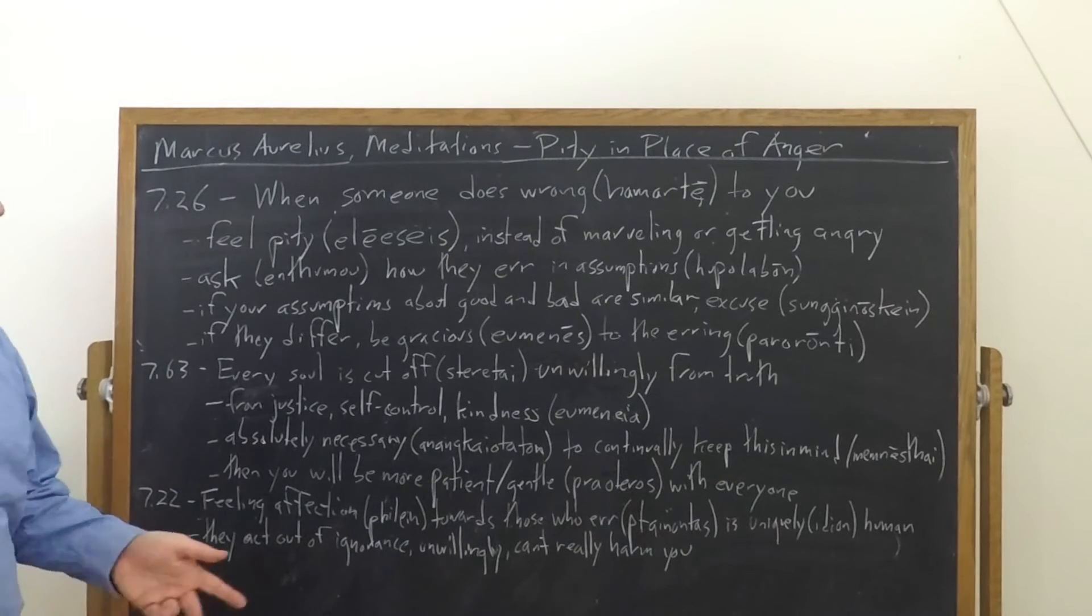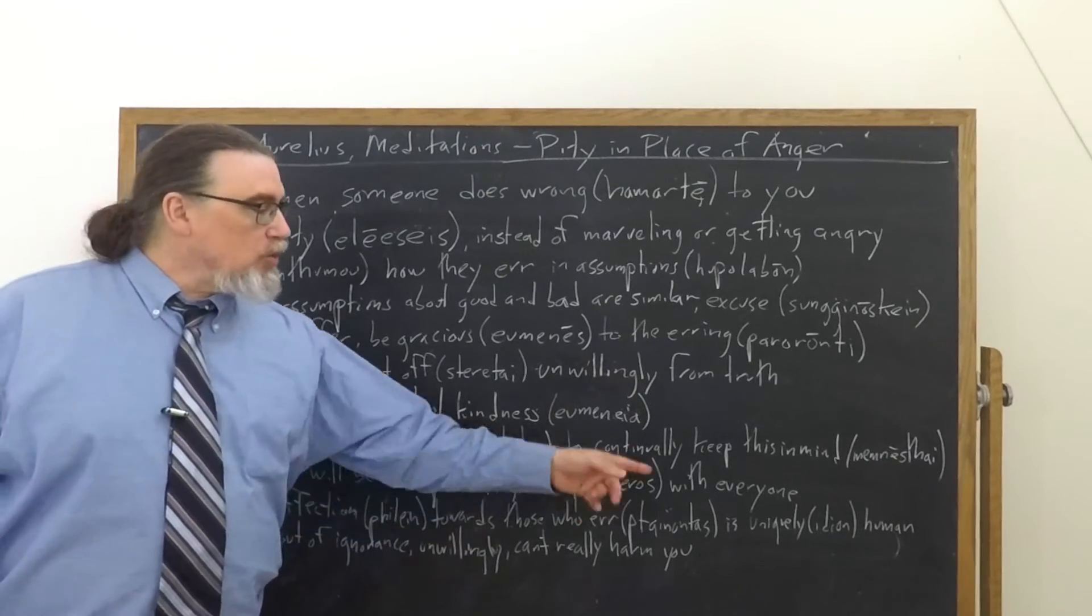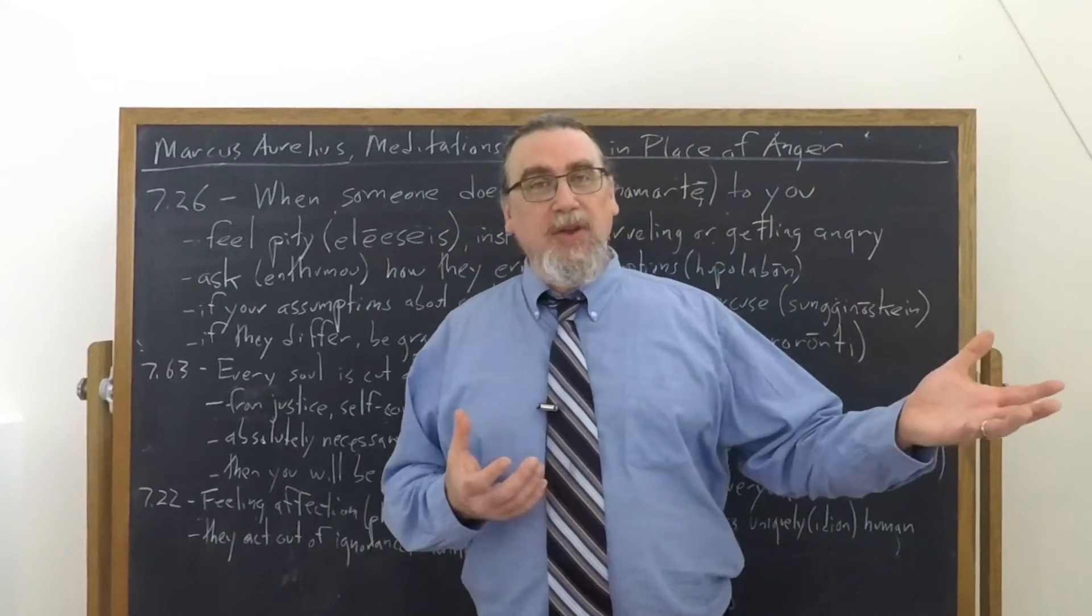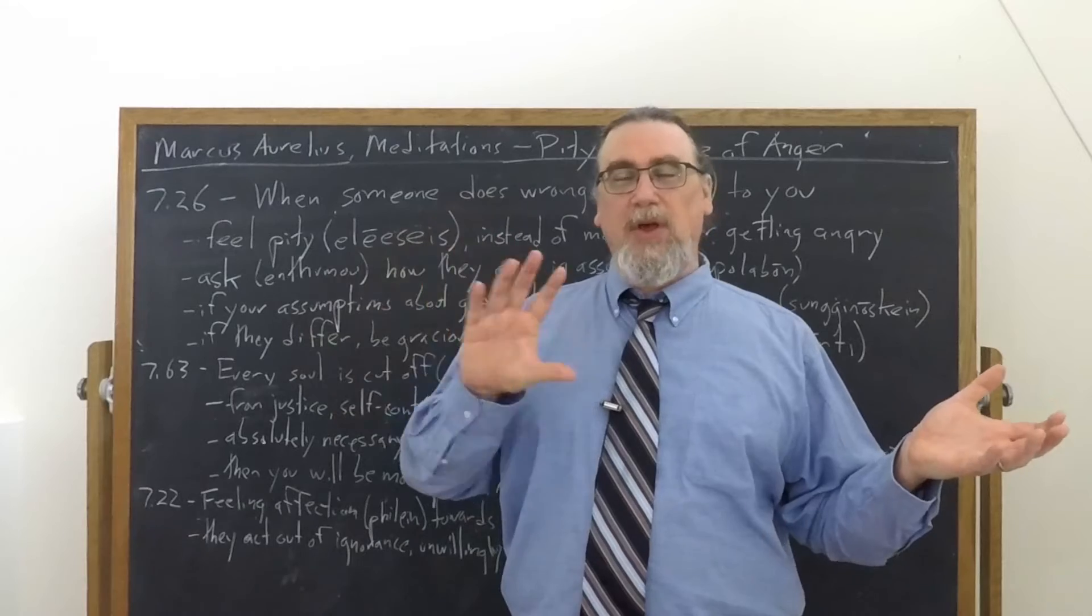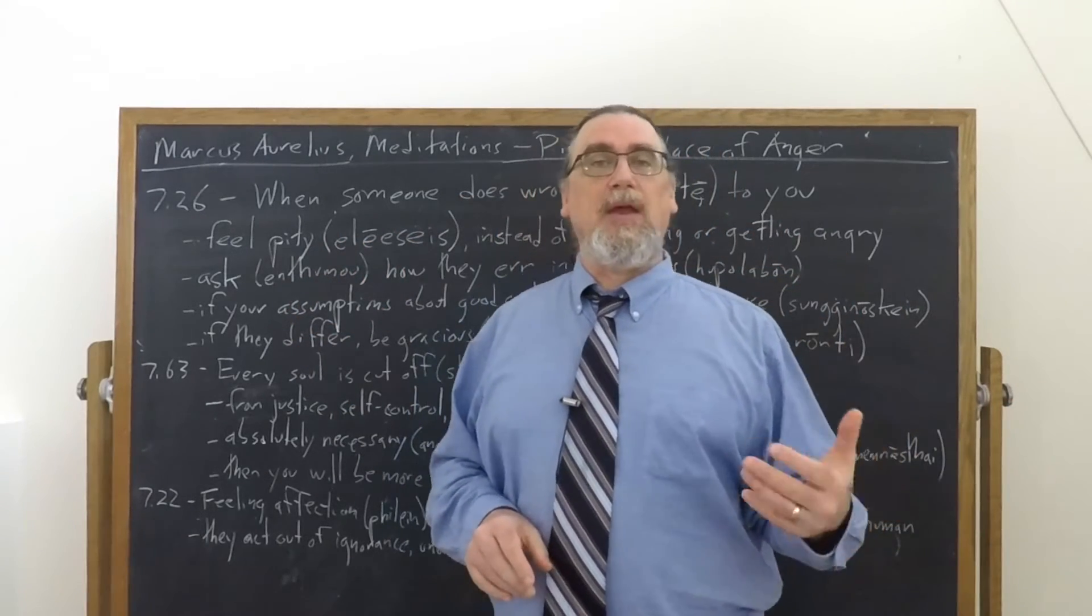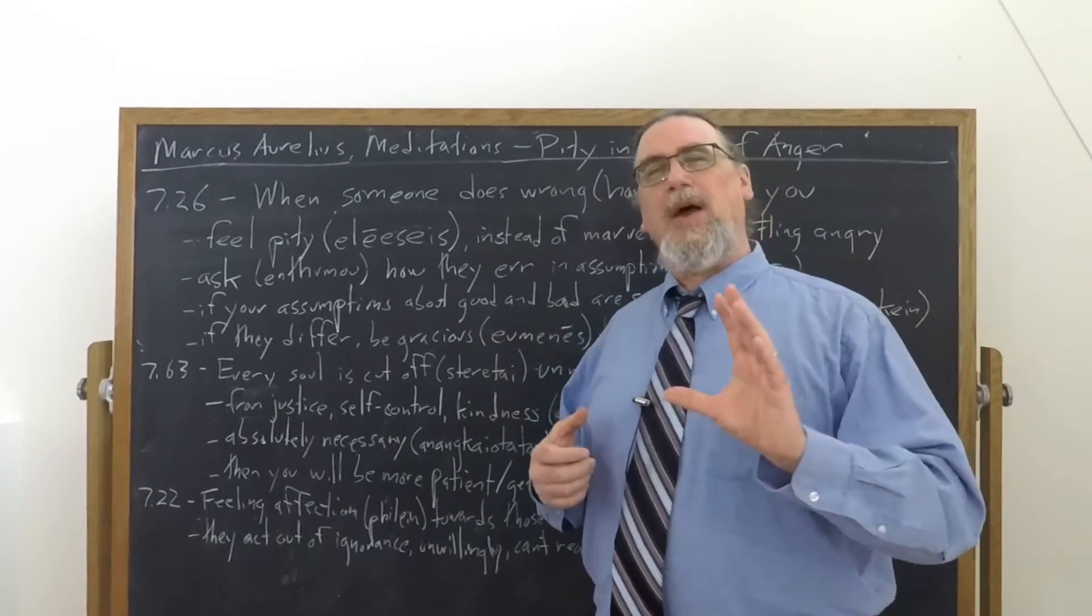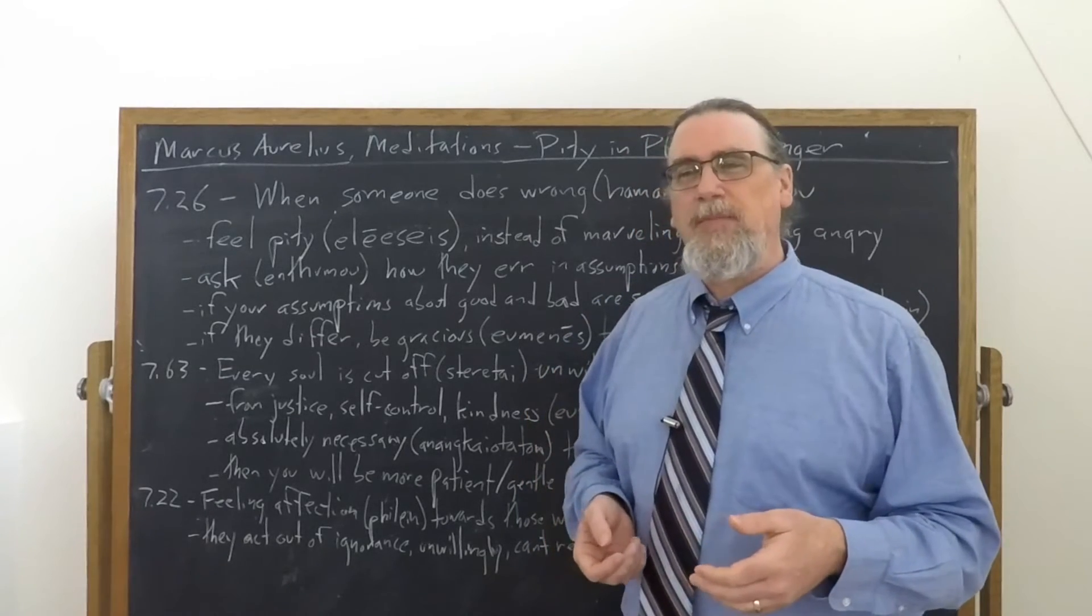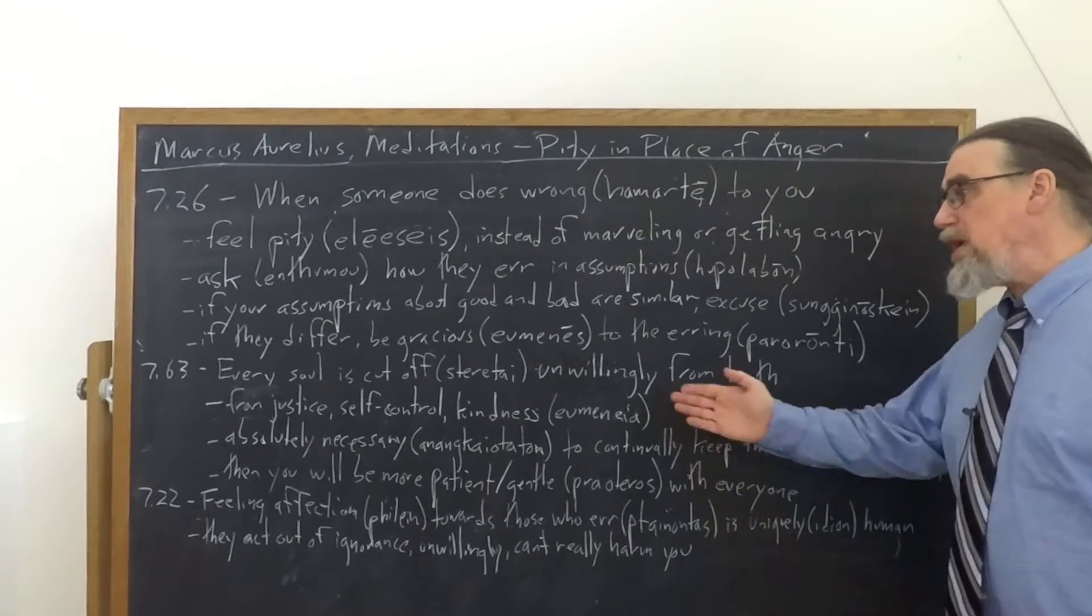And then what'll happen? You'll be more patient or gentle, prauteros. This is coming from the word praos, which is the opposite of anger. Orge, thumos, all these other terms are being angry. Praos means not being angry, or at least being angry at the right time for the right reason. The Stoics don't think that you should get angry with other people. So there isn't a right time. It just means being calm, or patient, or gentle.